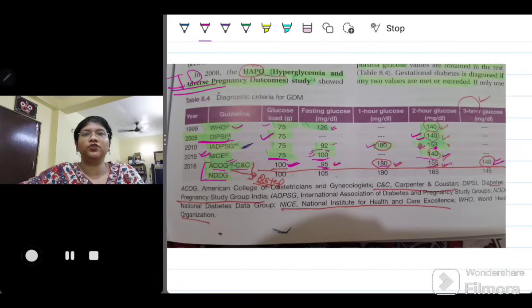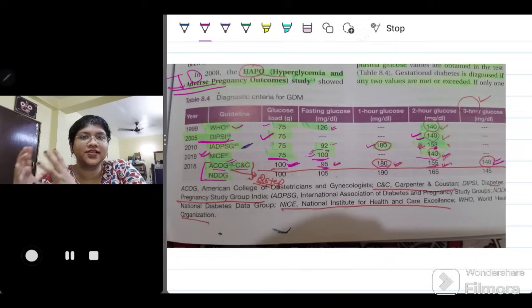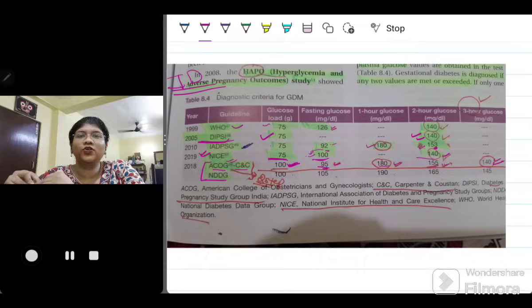I recommend all of you to take a screenshot of this particular table and you have to revise it before your exams because this is a very high yield table. I have tried to concise it using different sources. For the ACOG guidelines and the Carpenter Couston, you can find it in the Williams Obstetric textbook. The DIPSI criteria is given in the NHM website. Also the NICE guidelines I have taken from the website itself. You can check it out online and if you want the link you can DM me in my telegram handle or write in the comments section. That's it for today, have a great day ahead.